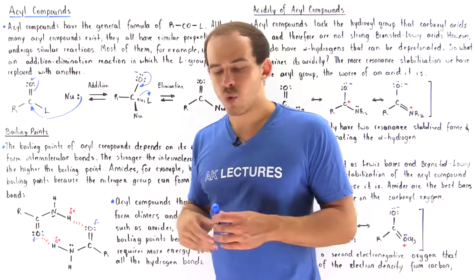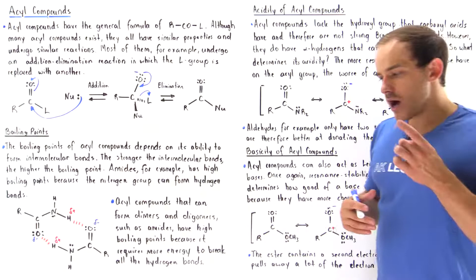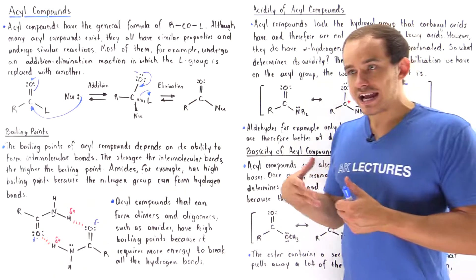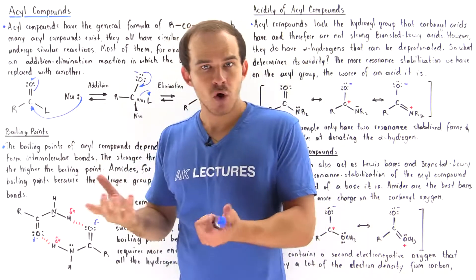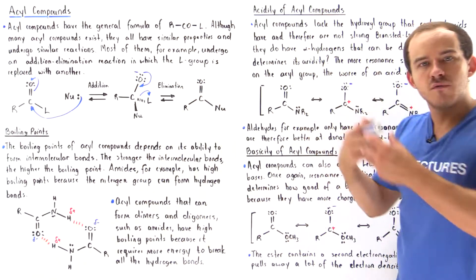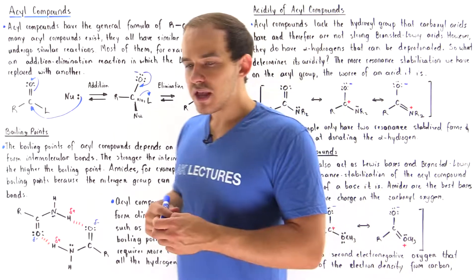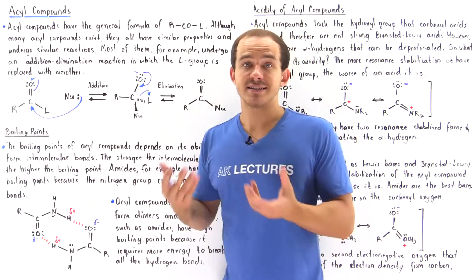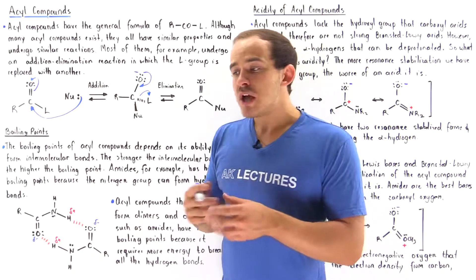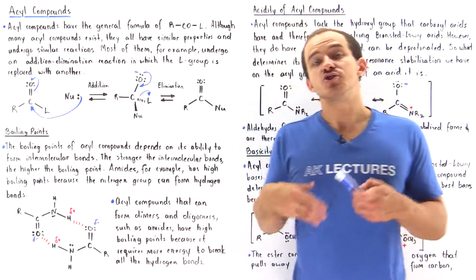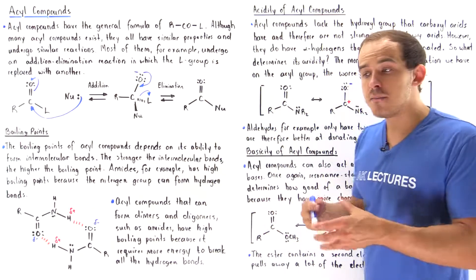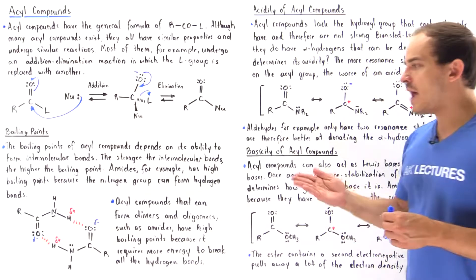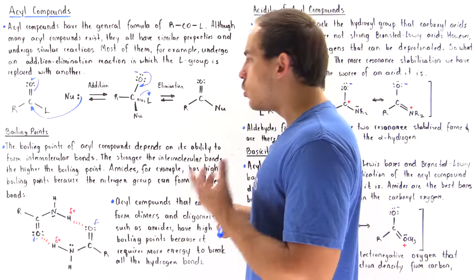In this lecture, we're going to focus on one type of physical property of acyl compounds: the boiling point, as well as the acidity and basicity of acyl compounds. The boiling point is the point at which vapor pressure equals atmospheric pressure, at which our liquid begins to boil and transform into the gas state. What determines the boiling point is the strength of the intermolecular bonds between the molecules — the more and stronger the bonds, the higher the boiling point, because more energy is needed to break them.